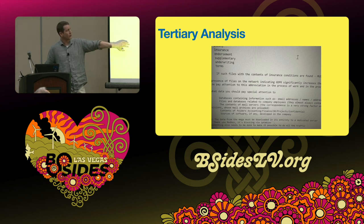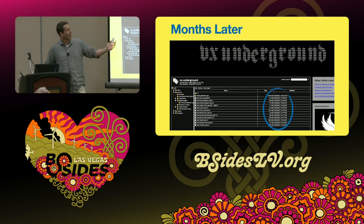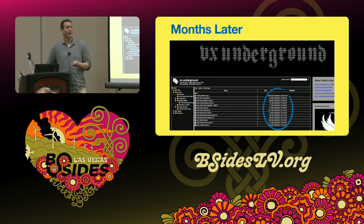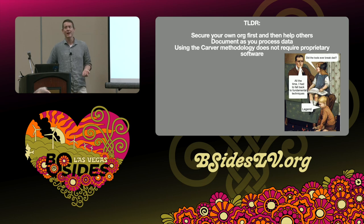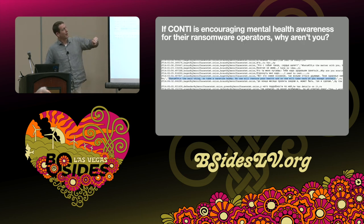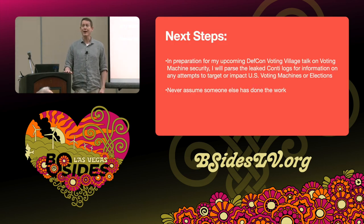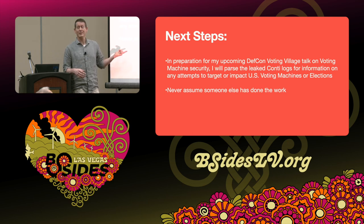They go for insurance programs and coverage — this came out last week. VX Underground documented all of this a year and a few months after the fact, which is fantastic, but back in February 2022 my immediate concern was: have I confirmed this leak isn't Russia targeting our financial infrastructure? The TLDR: secure your own organization first, document everything as you find it. The Carver methodology isn't just a software program — it's a mindset, because tools break and vendors disappear. If Conti can take care of their own ransomware operators, you need to take a vacation too. My next step is going back to the data to look at whether Conti is affecting U.S. elections — no one else has done this, so I'll take care of it myself.